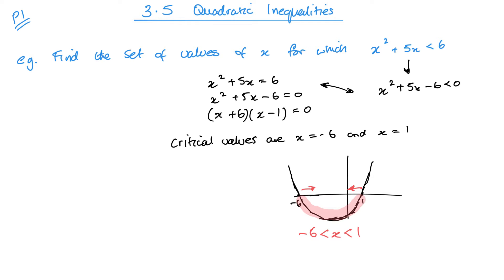Now it's just one region — that's all that's shaded as you can see there. So I can write it as one inequality: x greater than minus 6 but less than 1. Now if you need to write this in terms of set notation then you should be writing it as follows, and don't forget to put this into the brackets. Nice and easy.